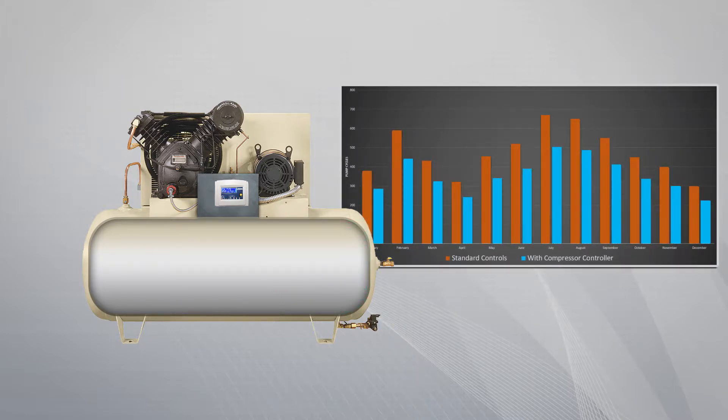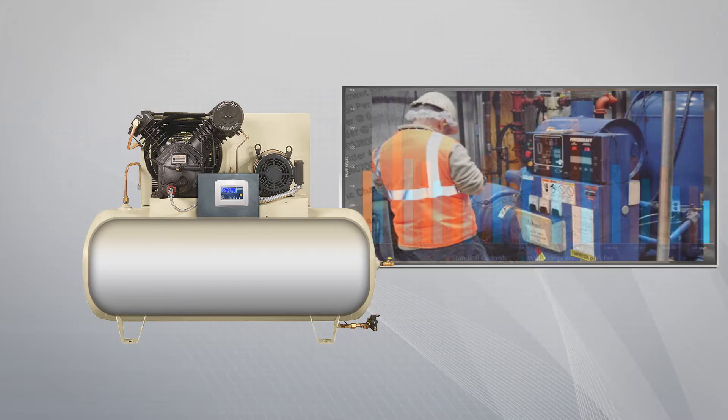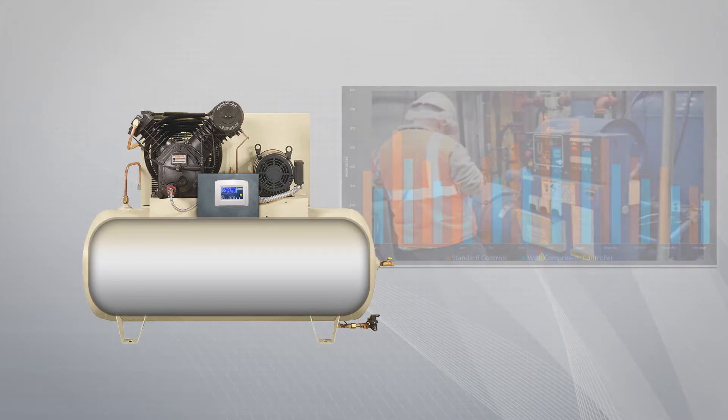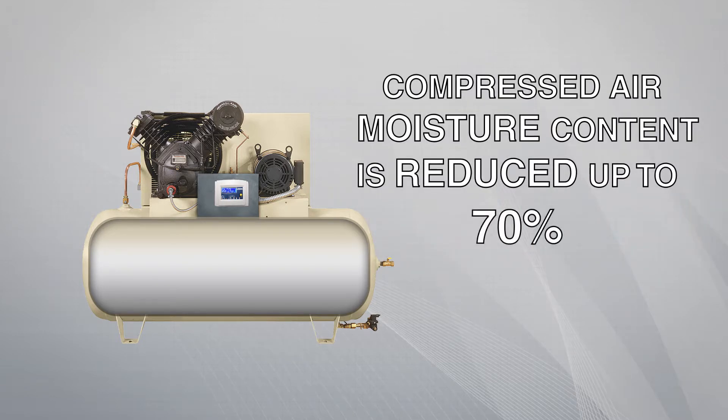This feature prevents the pump from unnecessarily cycling thousands of times over the course of its lifetime, saving hundreds or thousands of dollars in energy and maintenance costs. Most importantly with this approach, compressed air moisture content is reduced up to 70% without the use of additional dryers or conditioners.